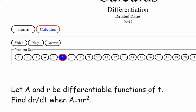Let A and r be differentiable functions of t. Find dr/dt when A equals pi r squared.